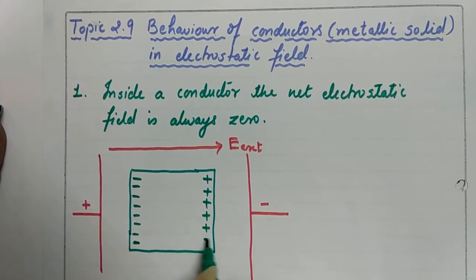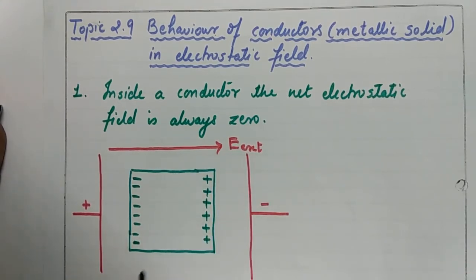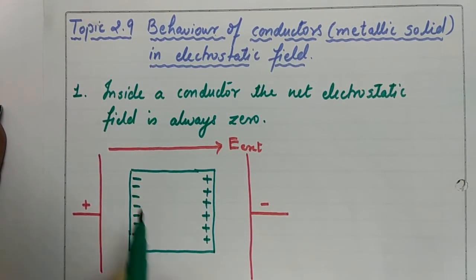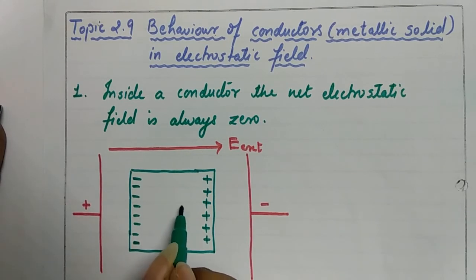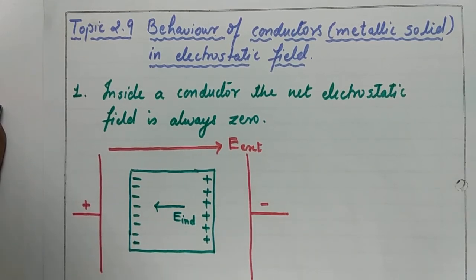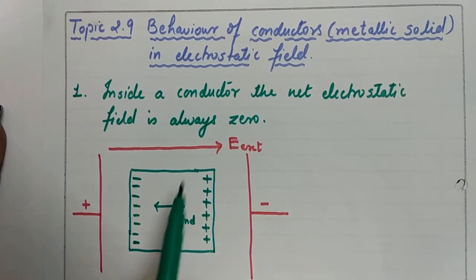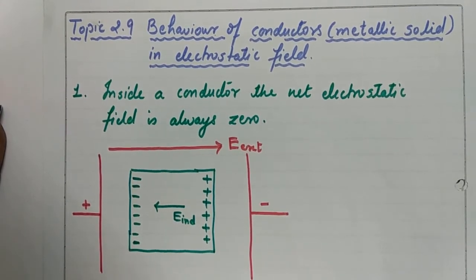This motion of electrons continues until the external electric field and the internal induced electric field inside the conductor become equal. Because of this motion, one side of the conductor is negative and the other side is positive, so we have an induced electric field in that direction — this is the induced electric field inside the conductor. The direction of the external field and the induced field are opposite, so as electrons continue to move, the strength of this induced electric field becomes higher and higher.